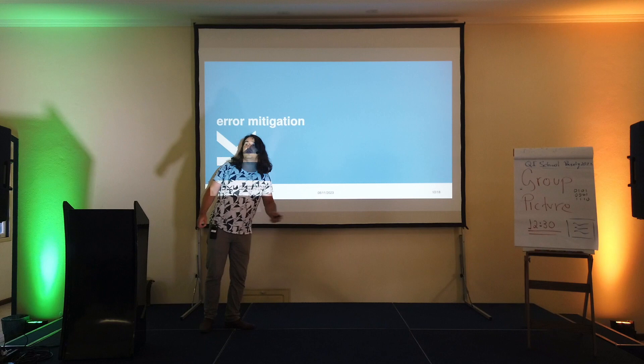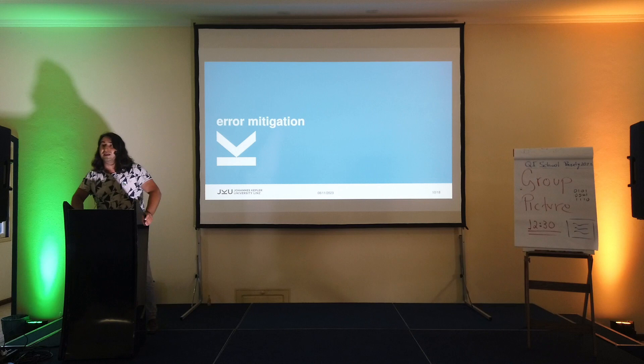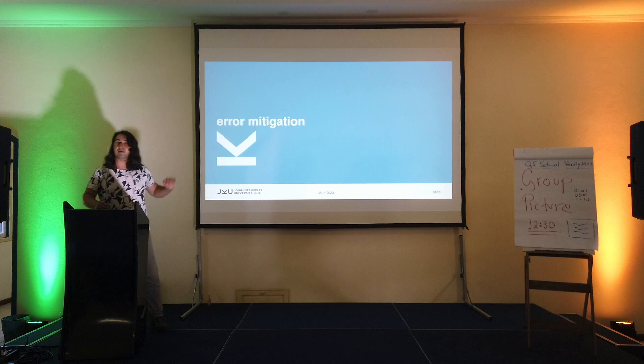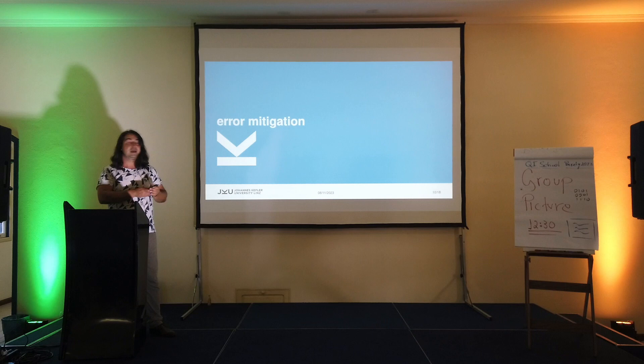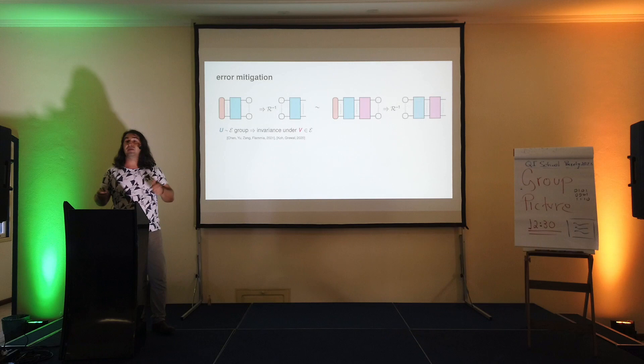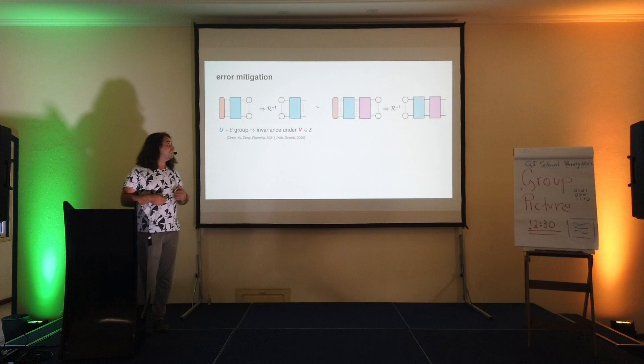Let me now move on to talking about errors. Our quantum computers make errors — this is the main reason we can't yet implement these things on dozens of qubits reliably. But maybe we can do some sort of error mitigation and get away with the noise in current devices. I want to provide high-level intuition that randomized measurements — applying a random unitary and then measuring — can be and are naturally well-suited for error mitigation techniques.